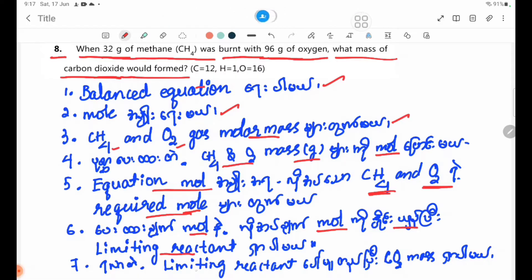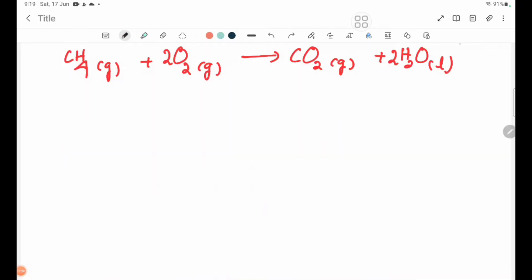The balanced equation is: CH4 plus 2O2 yields CO2 plus 2H2O. The coefficients are 1 for CH4, 2 for O2, 1 for CO2, and 2 for H2O.